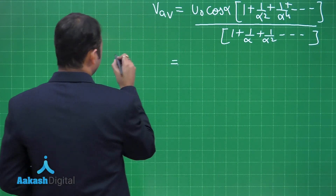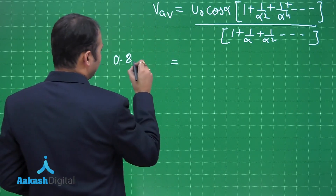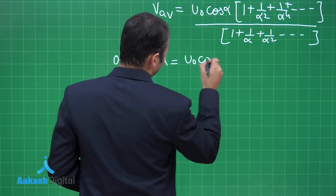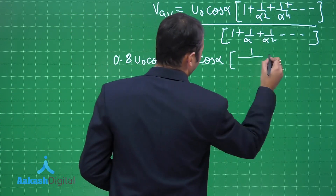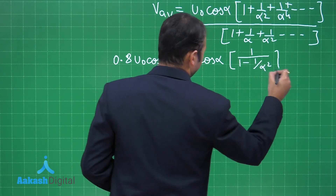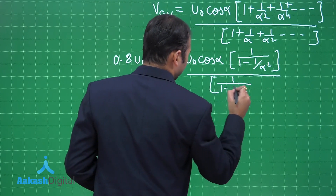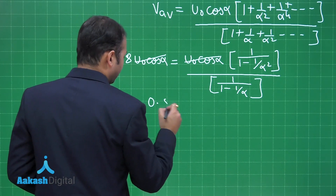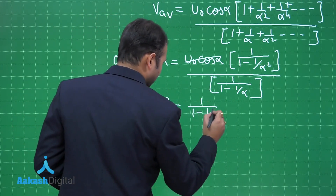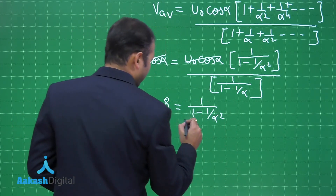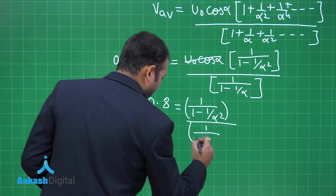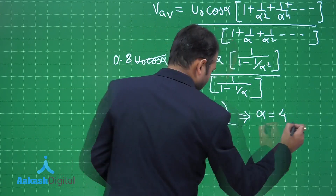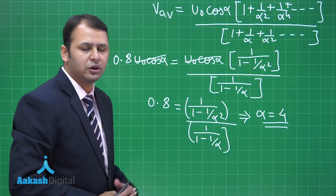This average velocity is given as 0.8 times v1, where v1 equals u naught cos theta. The u naught cos theta terms cancel. Each series is a geometric progression, so the numerator becomes 1 over (1 minus 1 over alpha squared) and the denominator becomes 1 over (1 minus 1 over alpha). Setting this equal to 0.8 and solving gives alpha equals 4. I hope you have understood the solution.